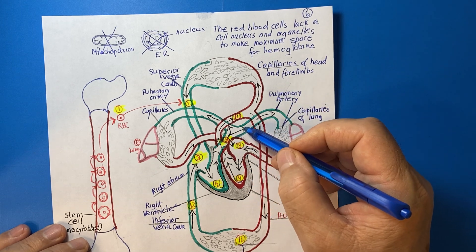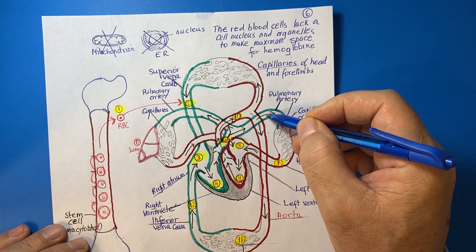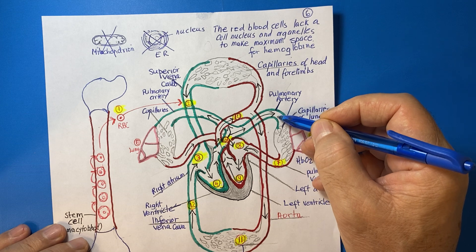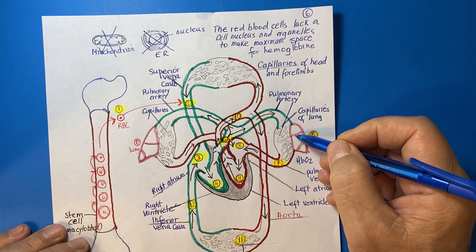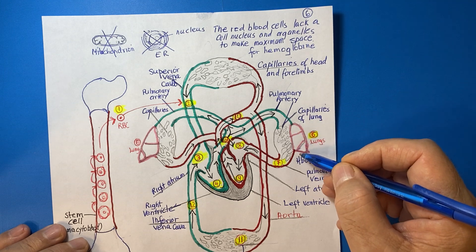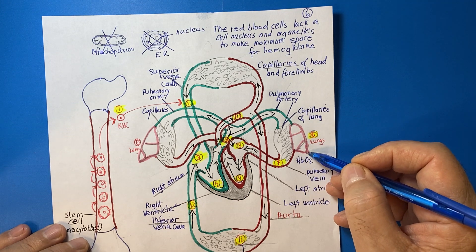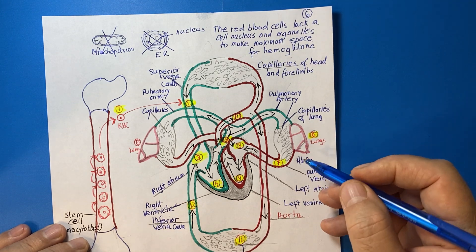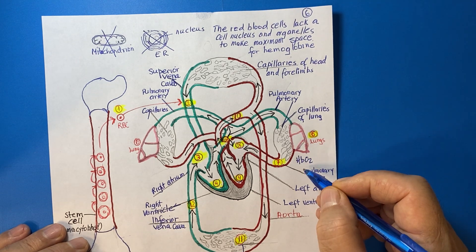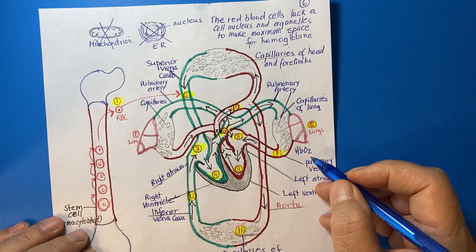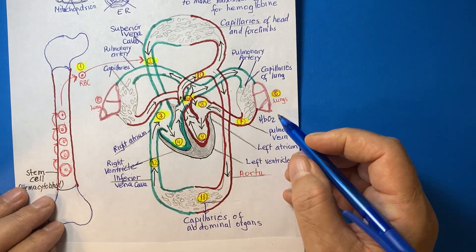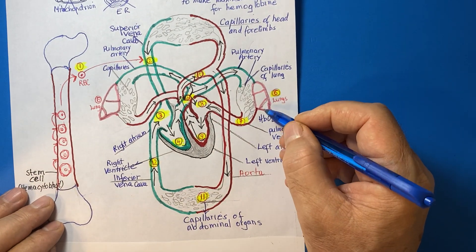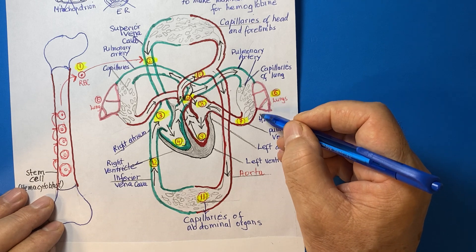The red blood cell travels to the lungs. In the lungs, the red blood cells take up oxygen — they are loaded with oxygen — and bind it to hemoglobin, forming HbO2, a complex with oxygen.